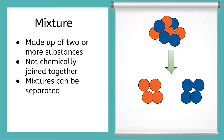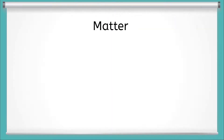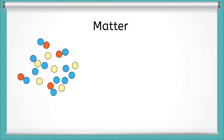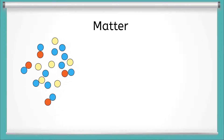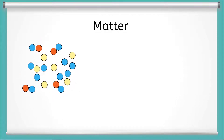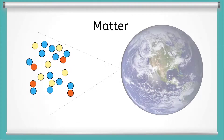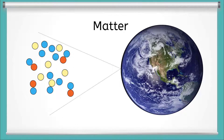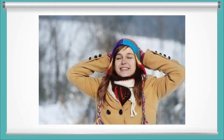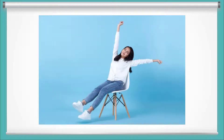Mixtures can be easily separated, and the substances in the mixtures keep their original properties. Everywhere we look, we are surrounded by matter. Matter is made up of millions of atoms and molecules that come together to form larger things like your backpack, your best friend, and even planet Earth. Matter includes the water we drink, the air we breathe, and the chairs we sit on.